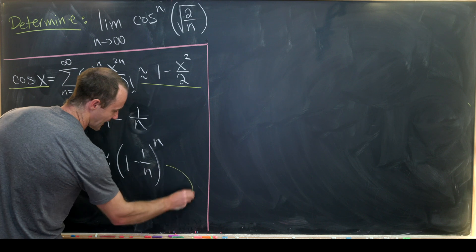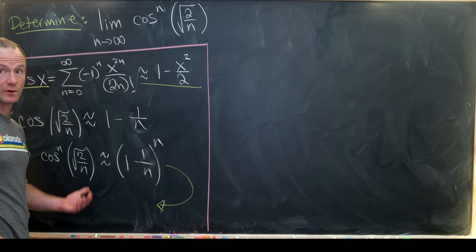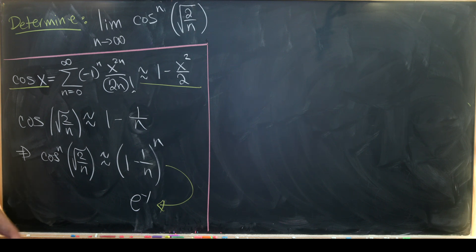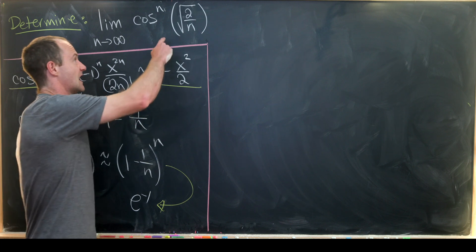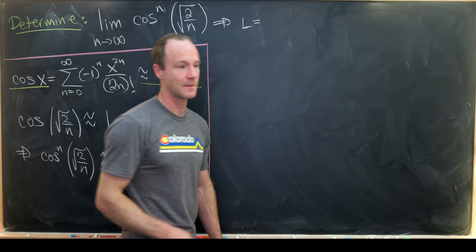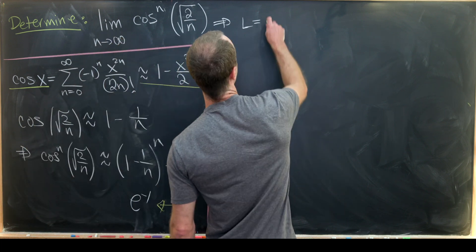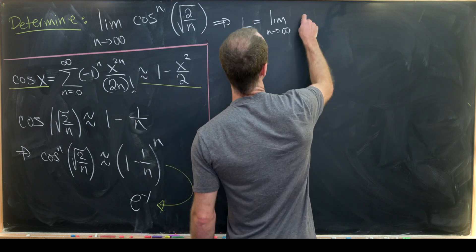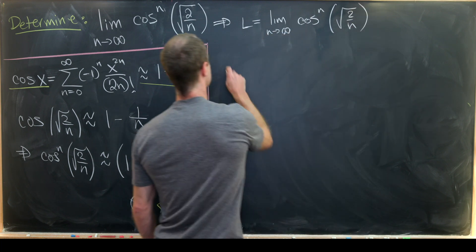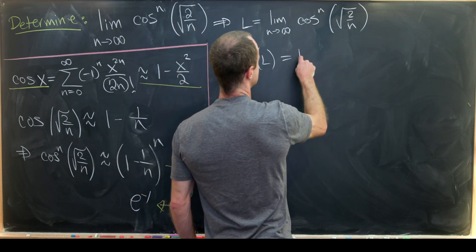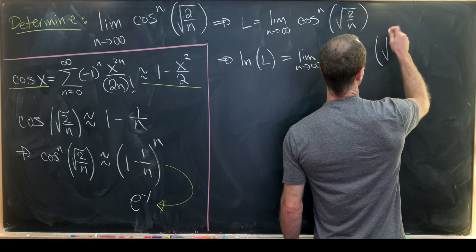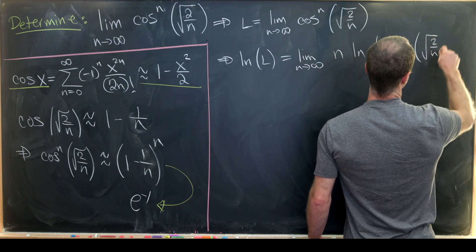That's a well-known limit — in fact, sometimes this is taken as the definition for a certain value. This limit is equal to e to the minus 1, which is a pretty nice value. Now let's see if we can calculate it carefully. Given that this is of type 1 to infinity, that gives us motivation to set this limit equal to L and then take a natural log of both sides. So ln(L) equals the limit as n approaches infinity of n times the natural log of cosine evaluated at the square root of 2 over n.